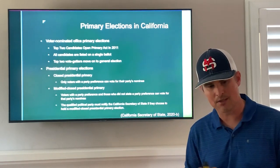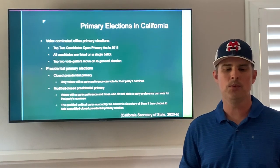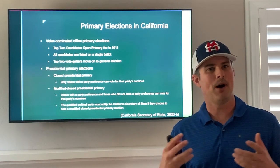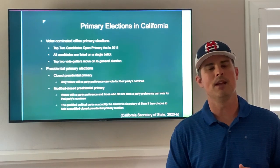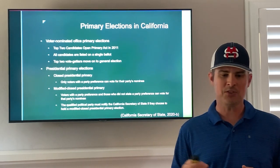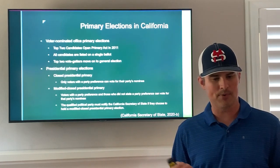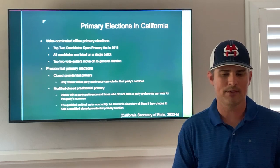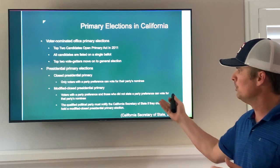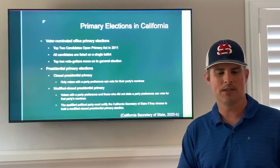The presidential primary elections are slightly different. In the closed presidential primary, only voters with a party preference can vote for their party's nominee — so if you're a Republican, you cannot vote for a Democratic president in the primary elections. There's also a modified closed presidential primary, where voters with a party preference and those who do not state a party preference can vote for the party nominee, and there are some rules around that.